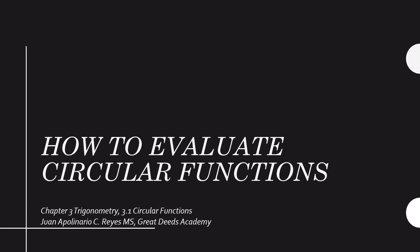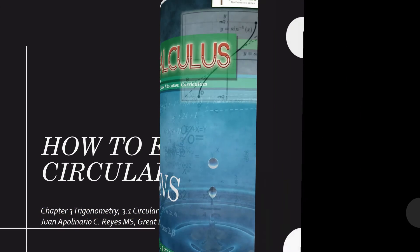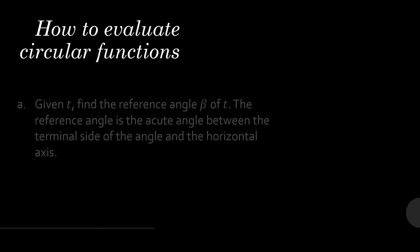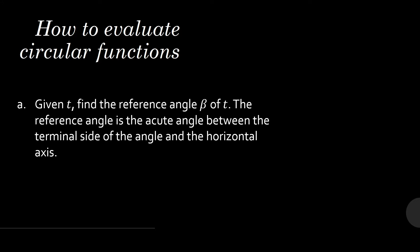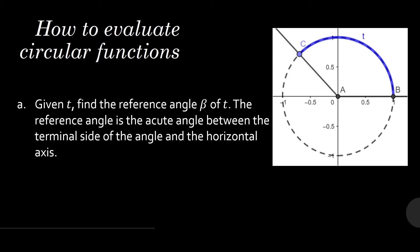Let us evaluate circular functions. These are the steps to evaluate circular functions. Given T, find the reference angle beta of T. The reference angle is the acute angle formed by the terminal side of your angle T and the horizontal axis.